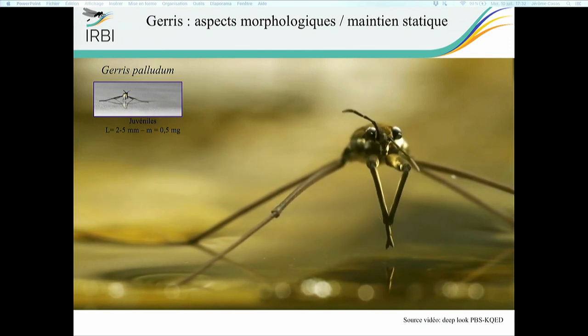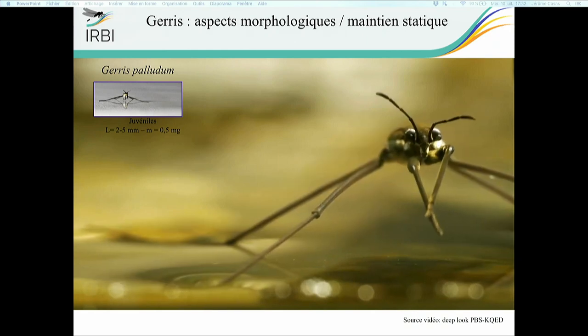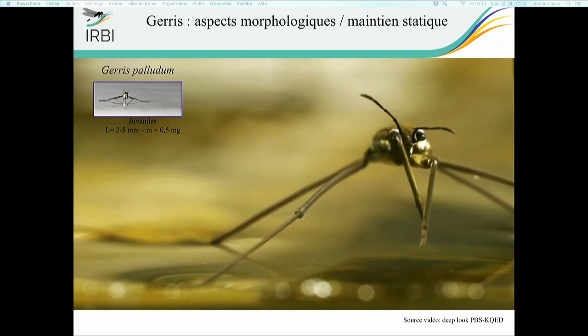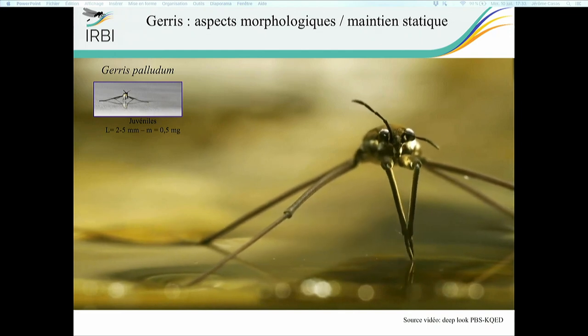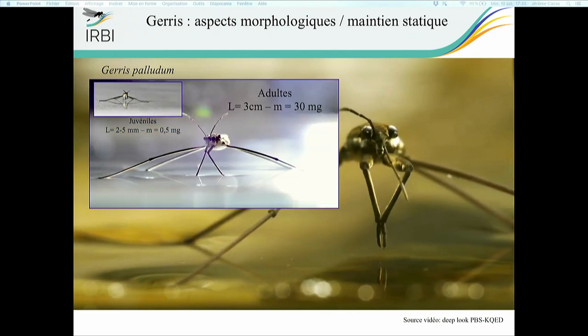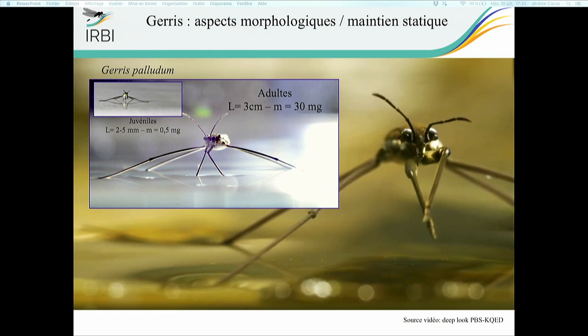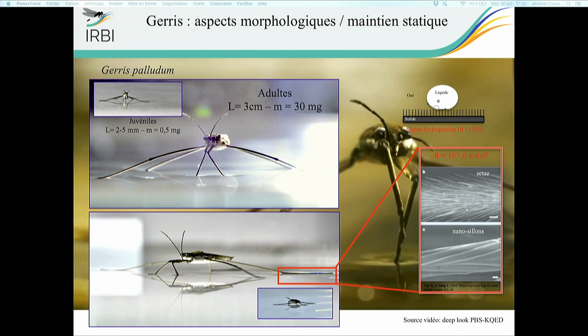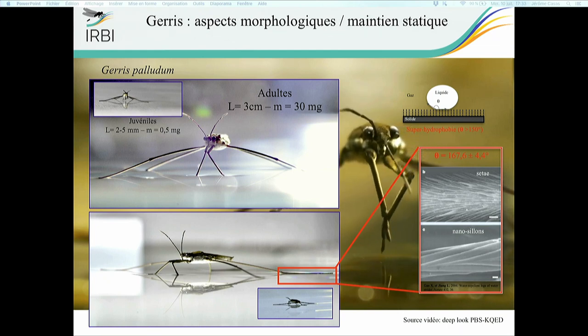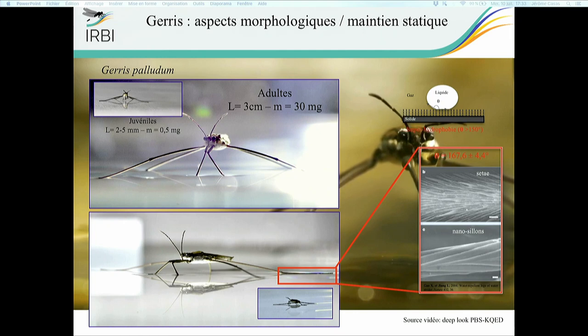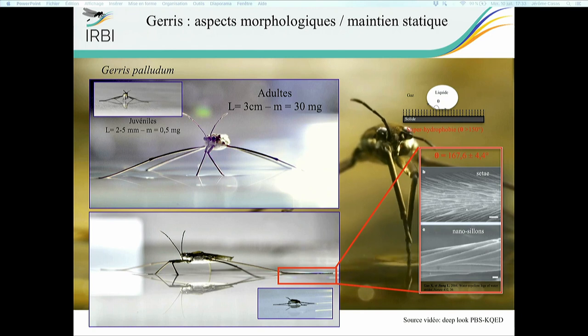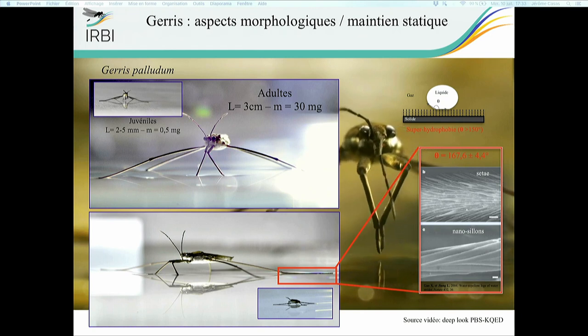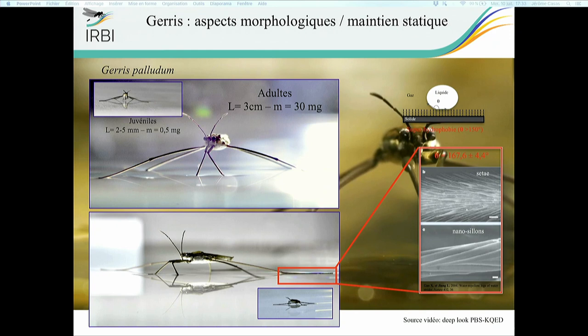Just to get known with the insects, they are beautifully constructed as you can see. The very small ones are a few millimeters long, weigh half a milligram, and the adults are much larger, three centimeters and 30 milligrams. If you look closely, on the legs which are long and thin you have all these hairs, setae as we call them, which have specific structures to be super hydrophobic. This is one of the reasons why they can walk on the water surface.